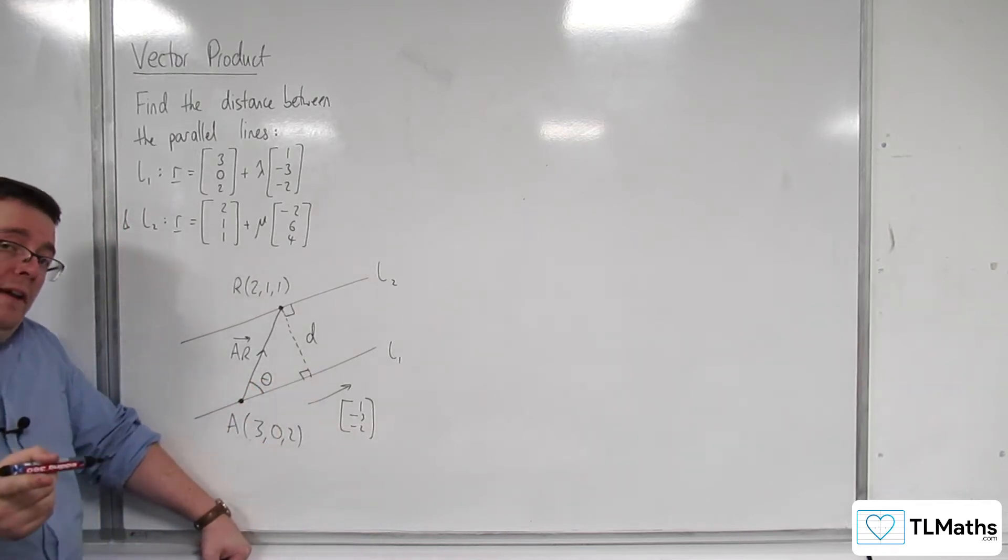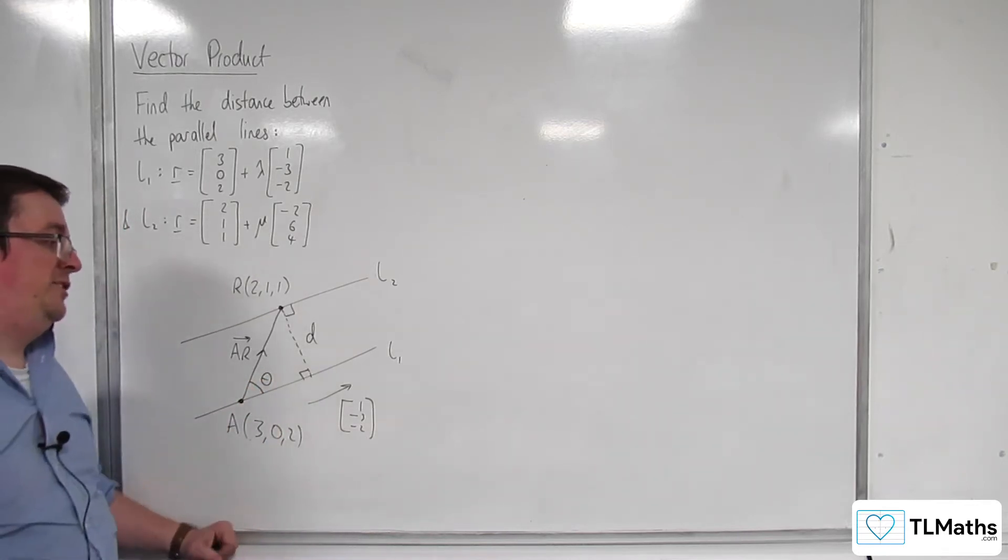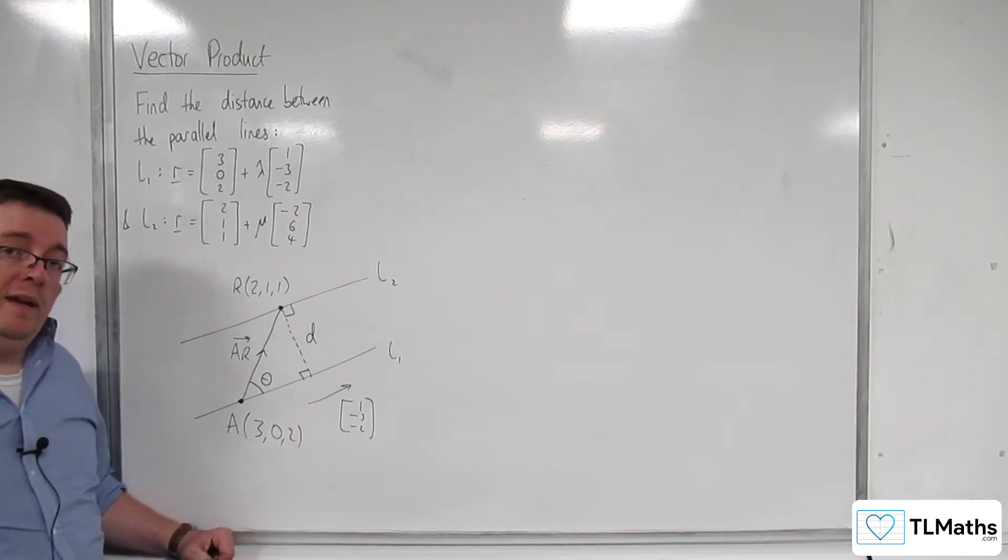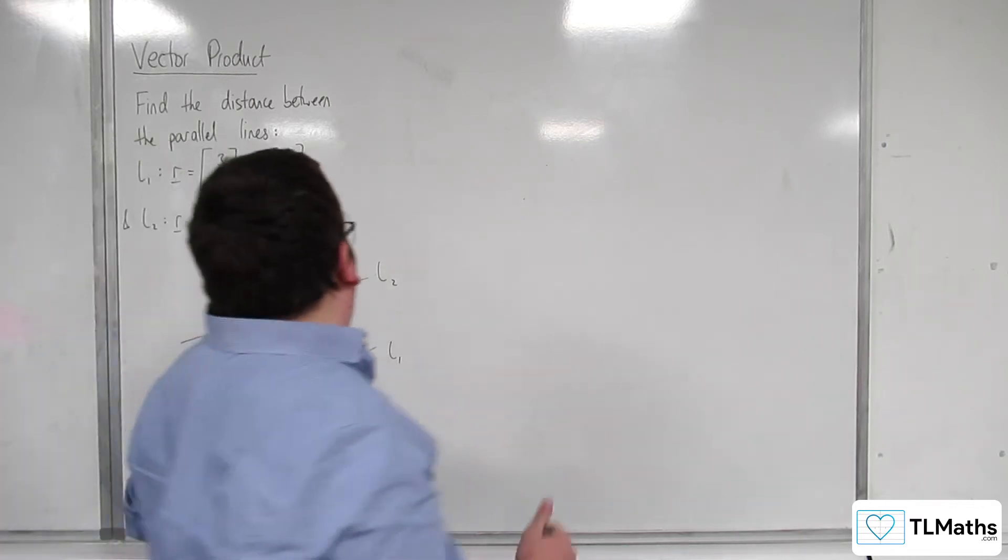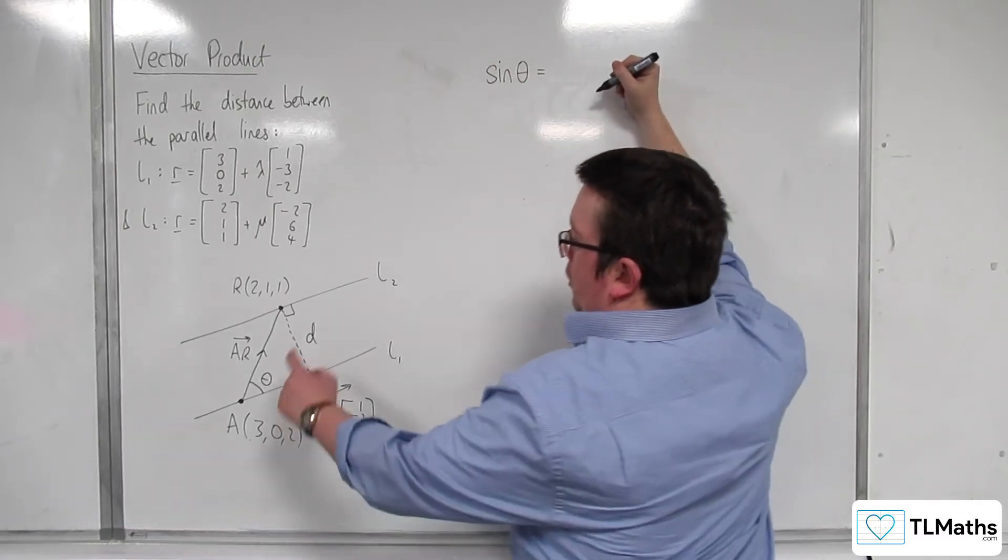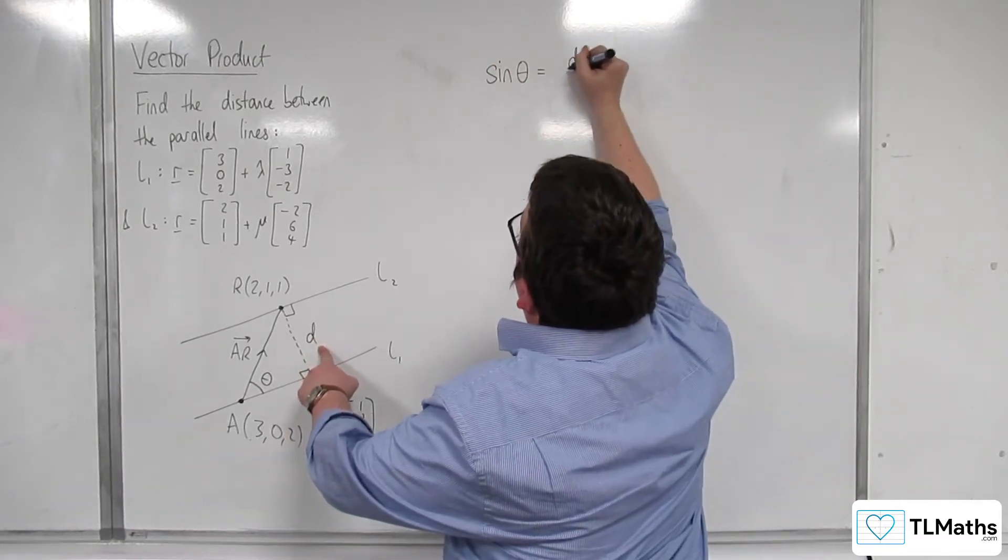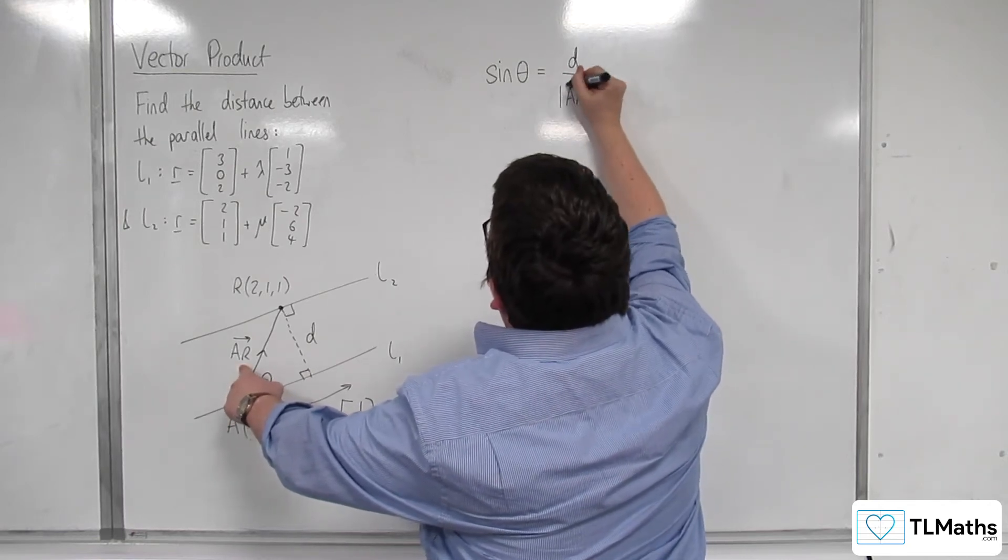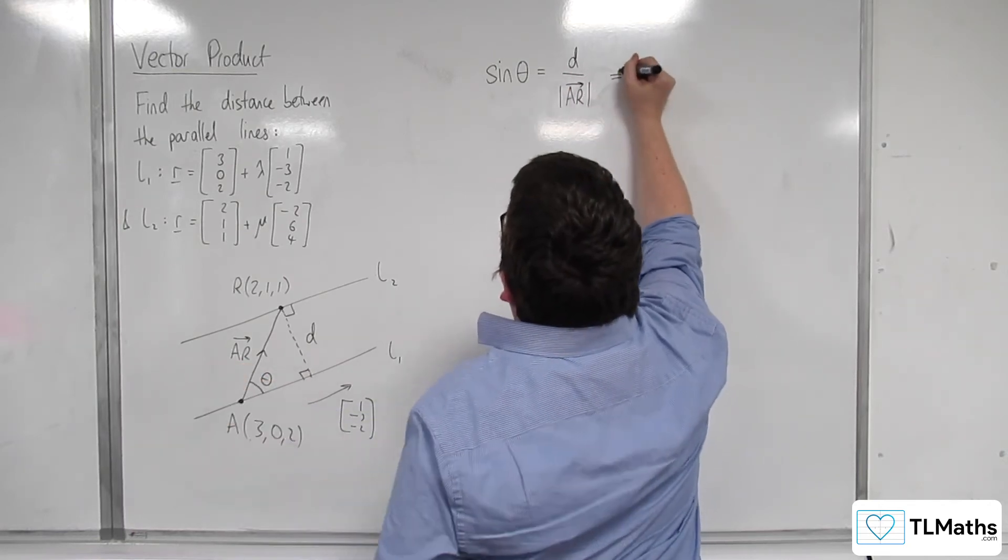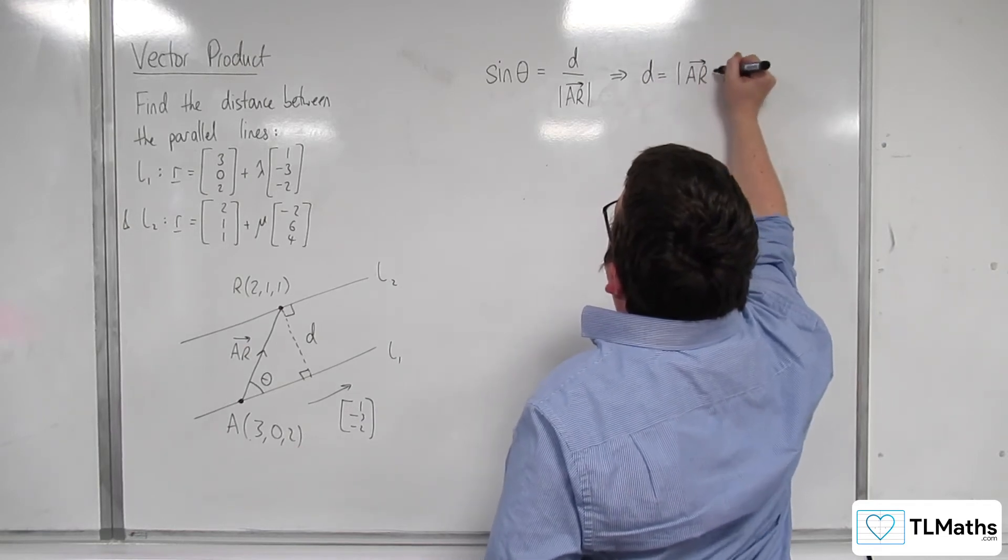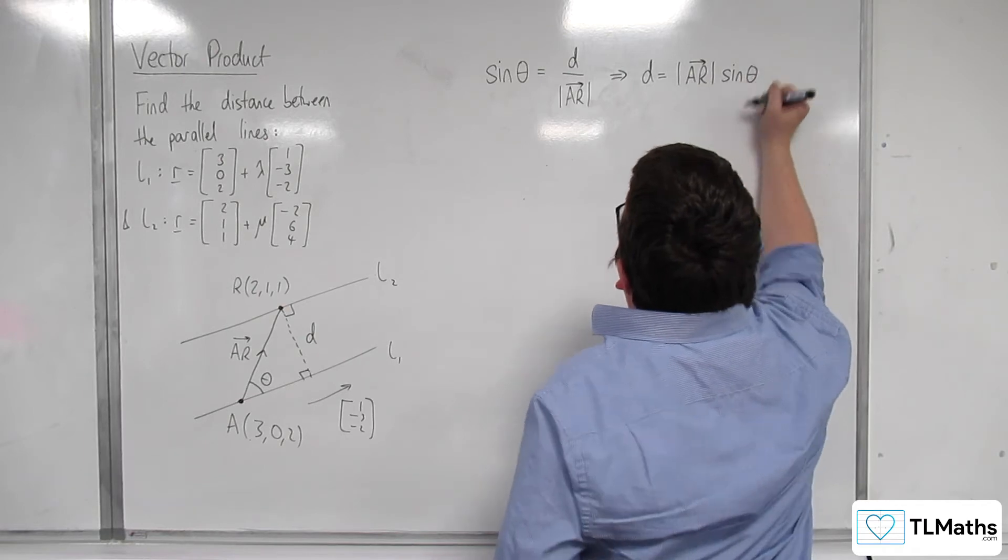So this is looking very similar to finding the shortest distance between a point and a line, which we were looking at a few videos back. Because what we can say then is that sine of the angle is equal to the opposite, D, over the hypotenuse, which is the length of AR. So D is equal to the length of AR times sine of the angle.